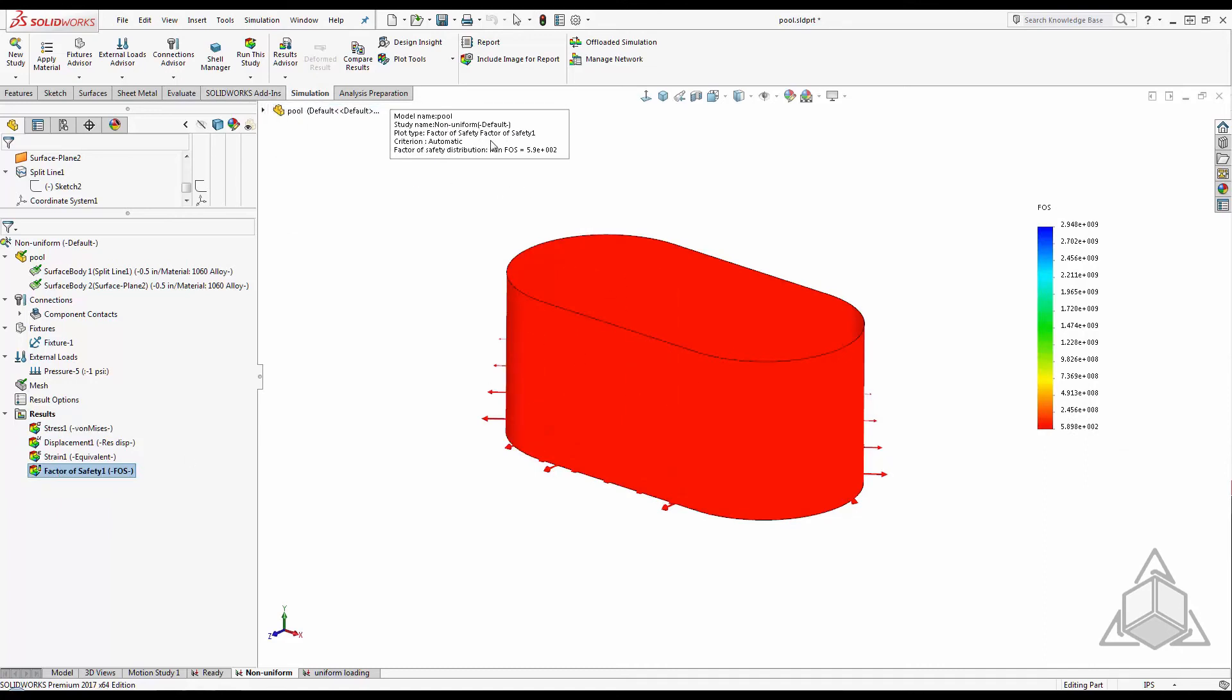A quick check of the factor of safety plot shows an FOS of almost 600. With this new information, I can start modifying my design and saving money.